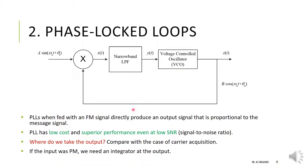To conclude: if the input was PM, we just need an integrator at the output. To summarize, we have covered two different techniques for FM demodulation — frequency discrimination and the phase-locked loop.